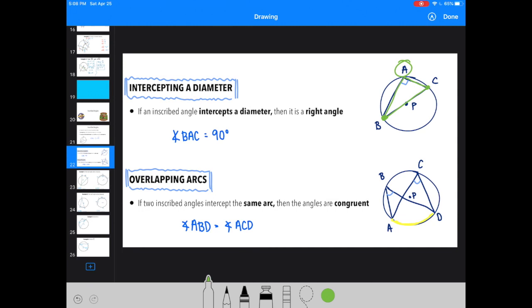Another unique relationship about inscribed angles is going to be the overlapping arcs. So if you have two inscribed angles where the arc of those inscribed angles is identical, then those inscribed angles are going to be identical. So here, angle ABD is congruent to ACD because they share the same arc AD.